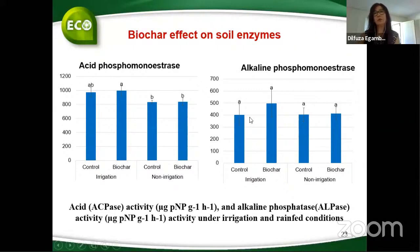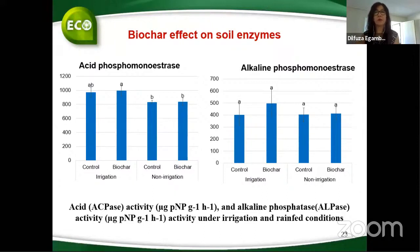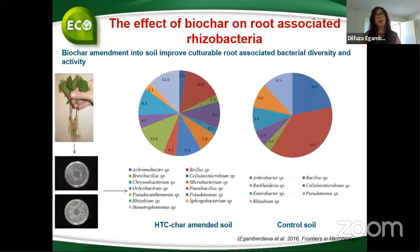Biochar also increased microbial community diversity in the soil. Soil enzymes such as alkaline phosphatase increased under irrigated conditions after biochar application, meaning some enzymes are improved after biochar application, maintaining soil fertility. We also studied the mechanism of action — how biochar increases the growth system and soil fertility — again using soybean in pot experiments to compare with control soil.